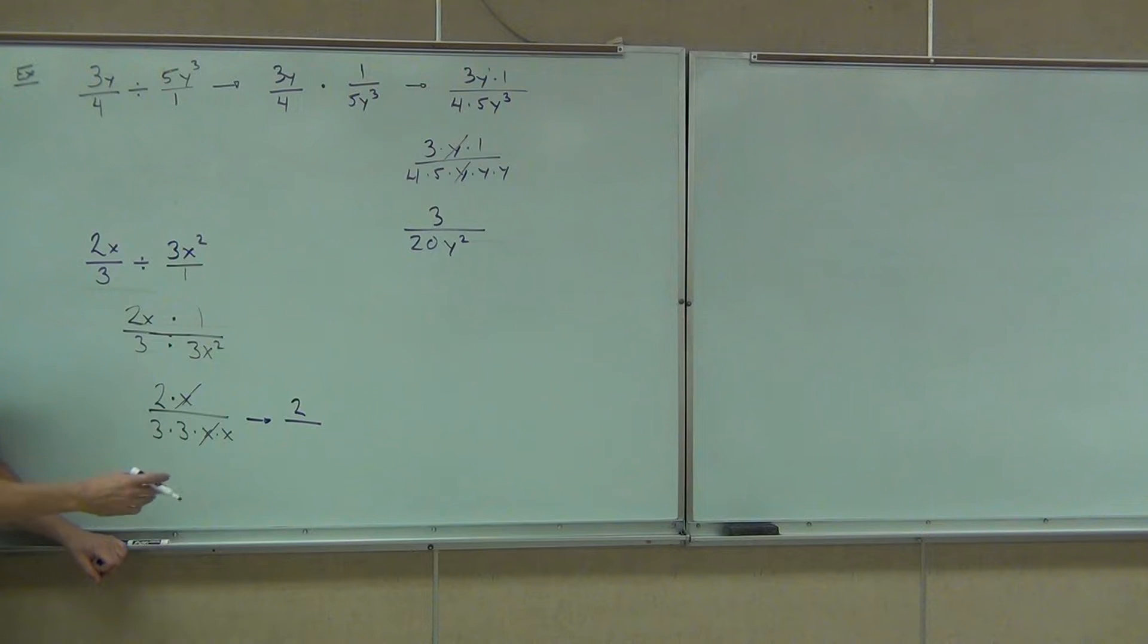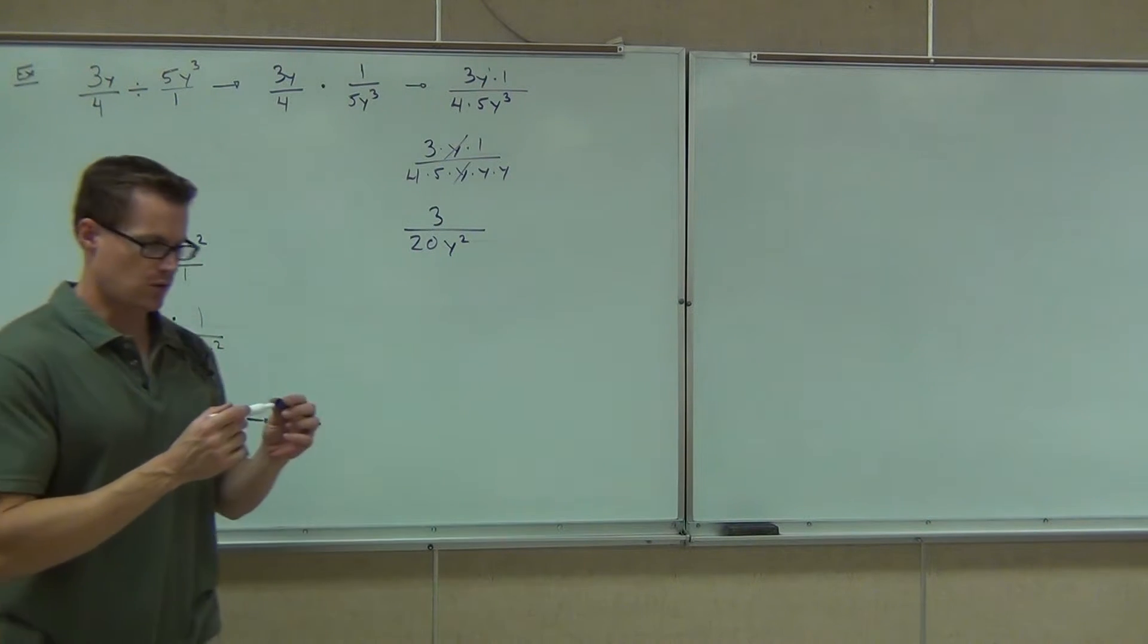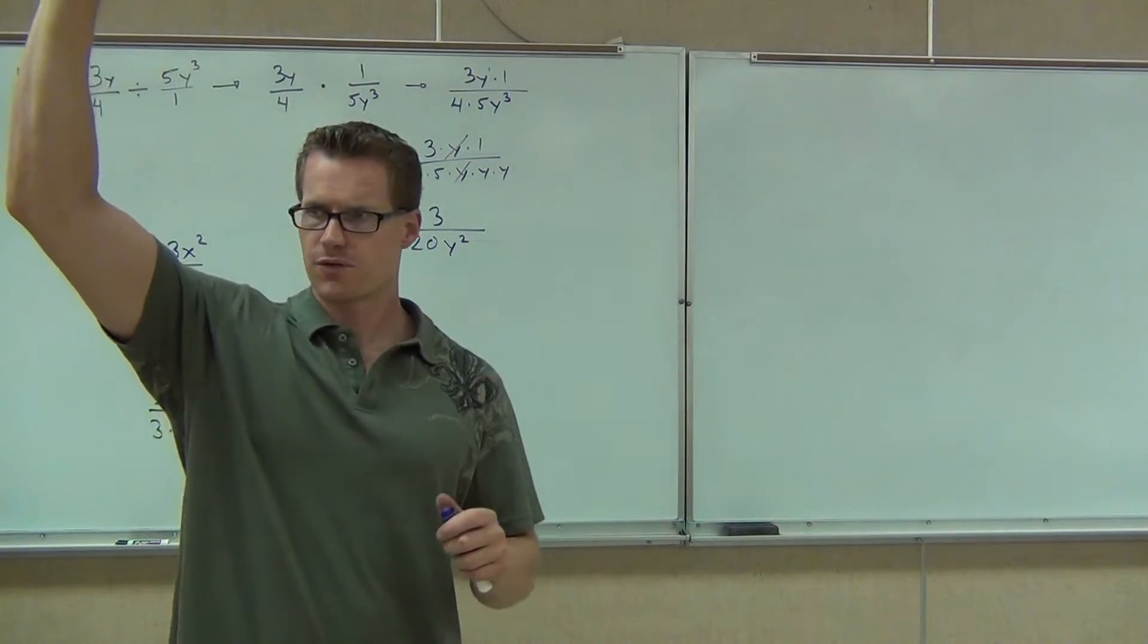9x, good, because we're multiplying what's left over. We have 3 times 3 is 9. We still have one of those x's that should mean x to the first power or x. Raise your hand if you've got that one. Good for you. That's fantastic.